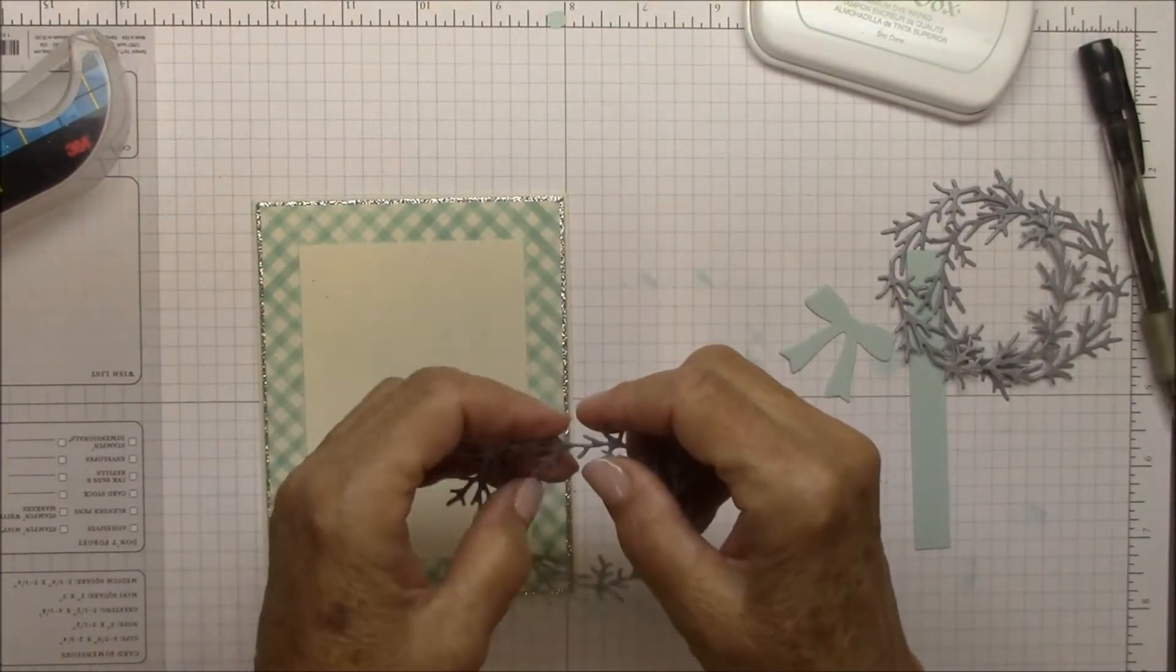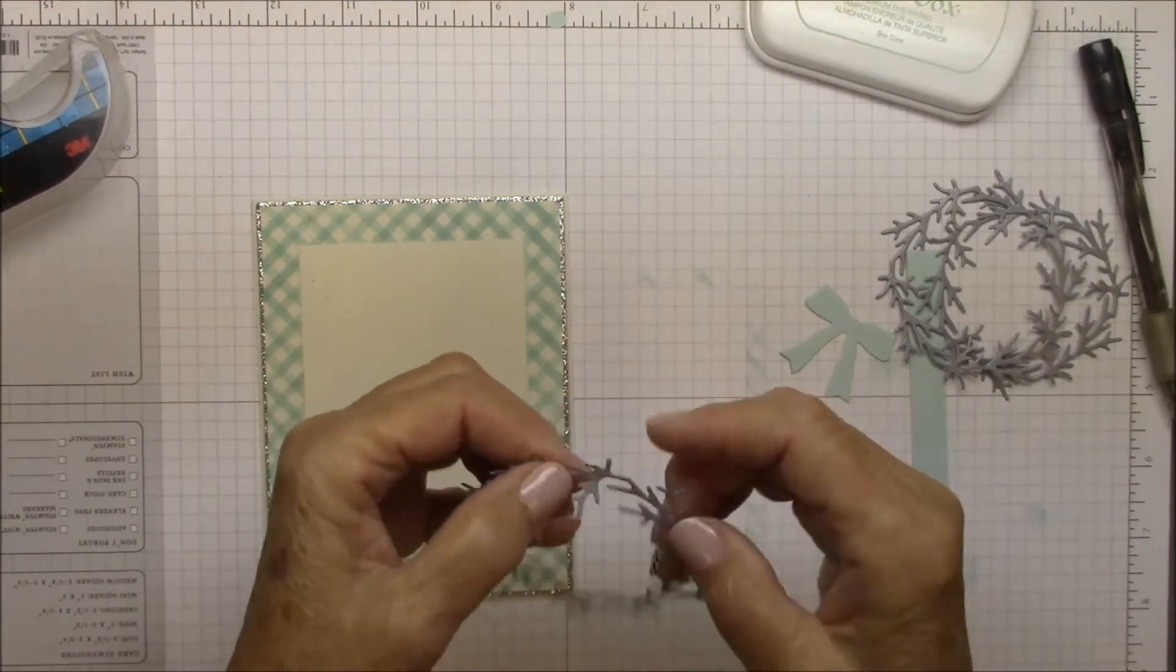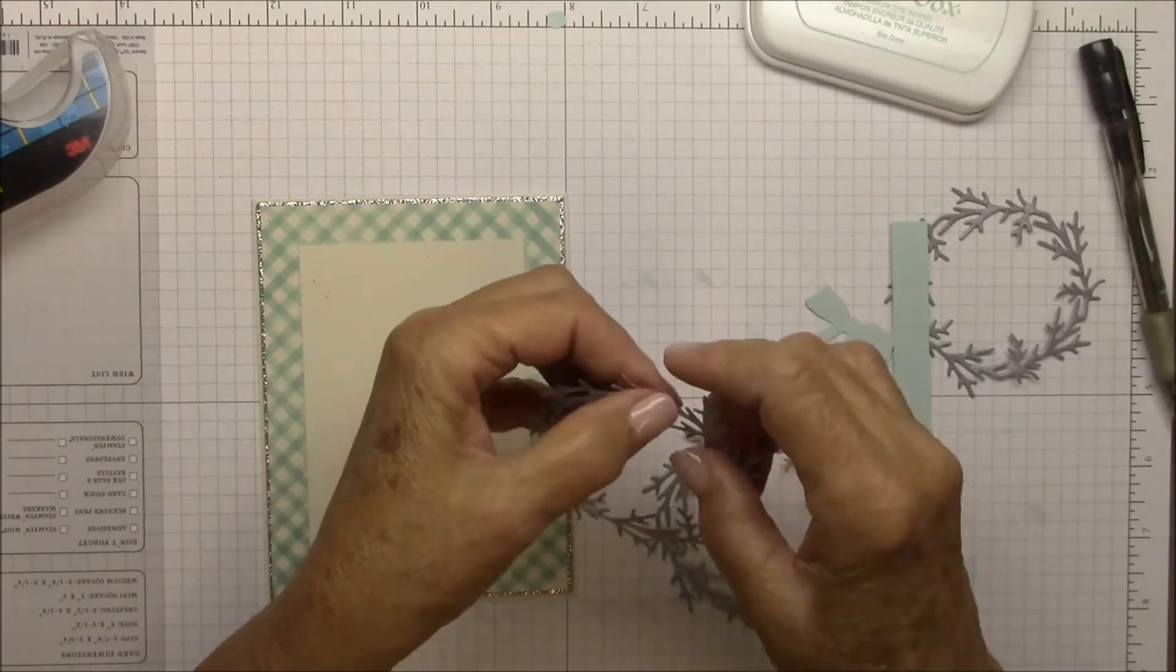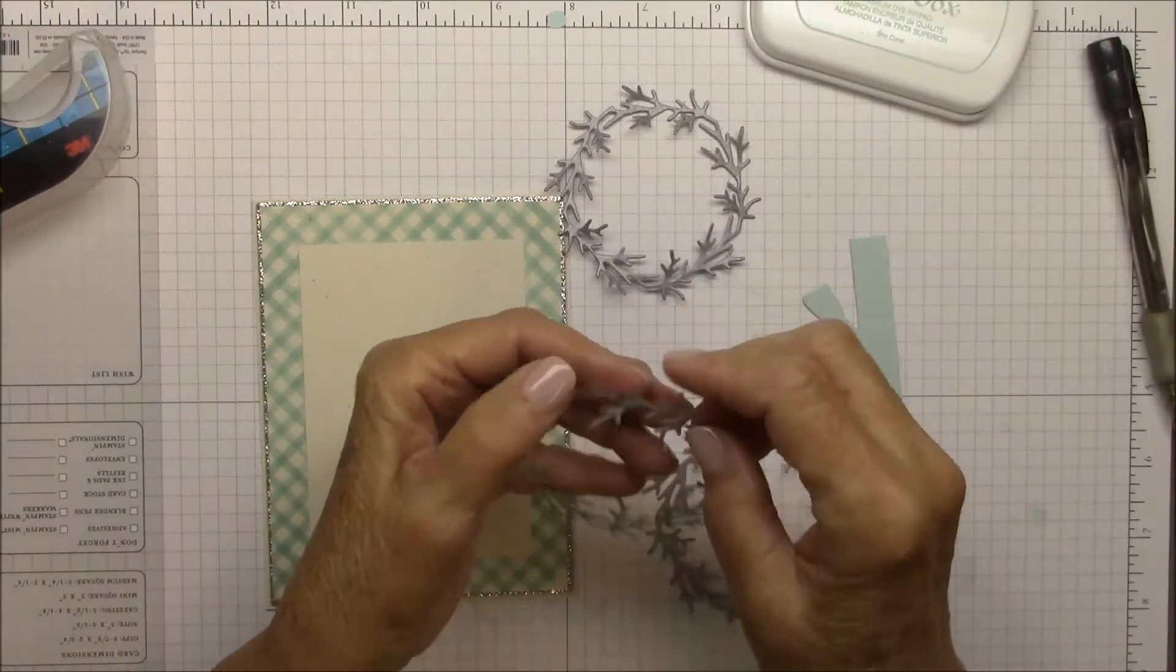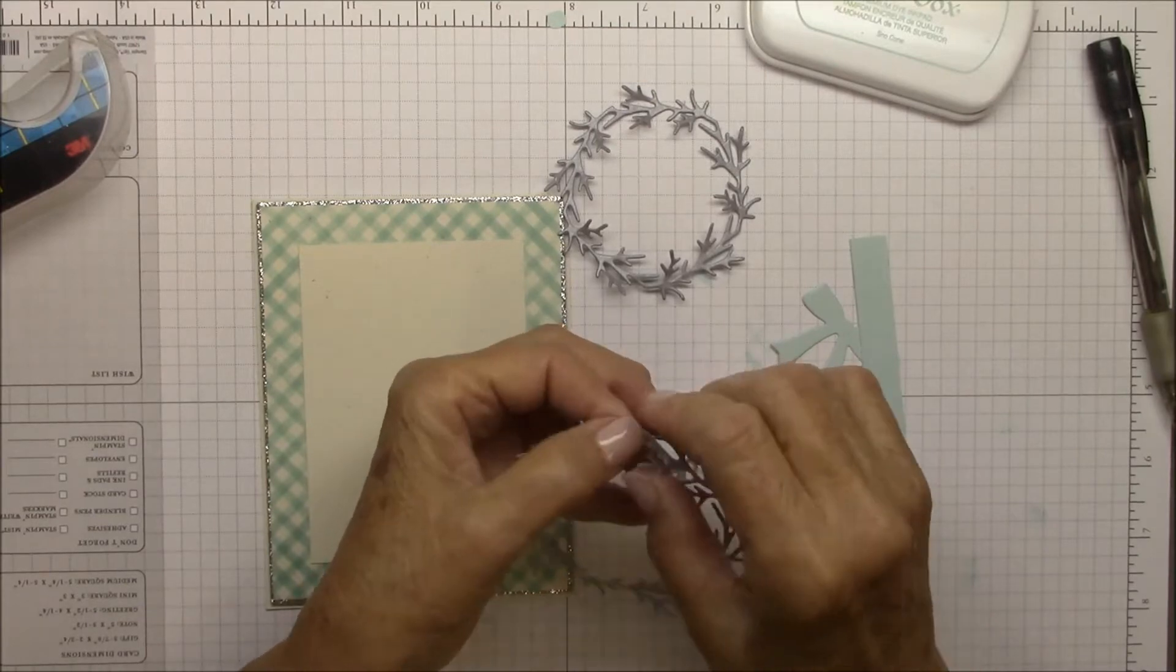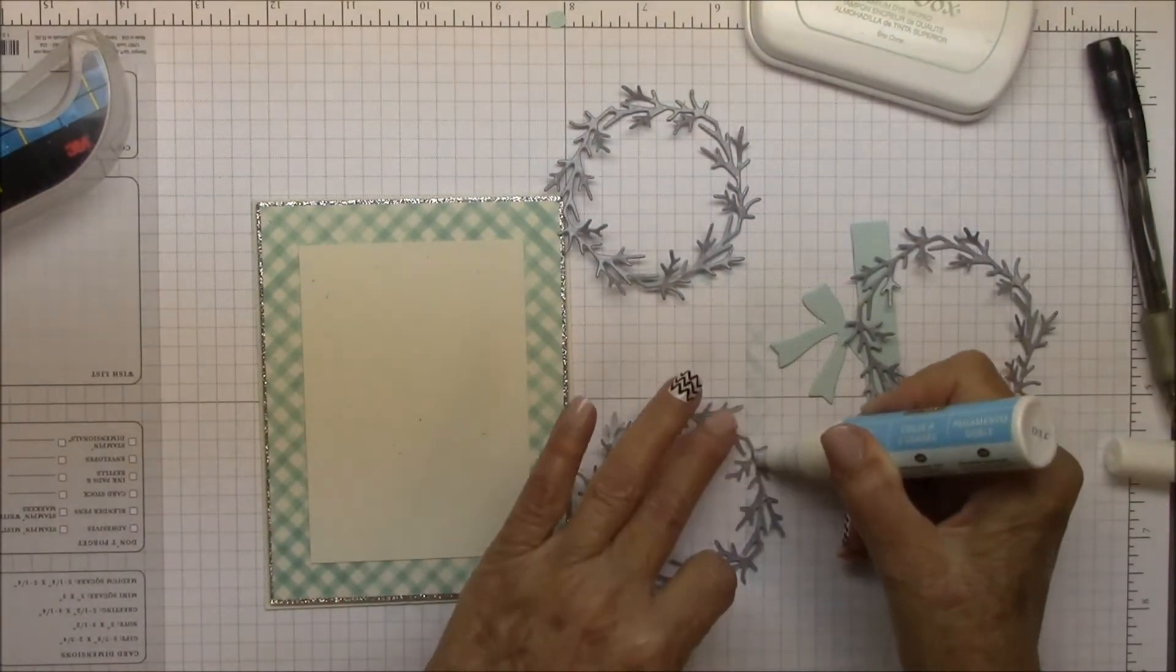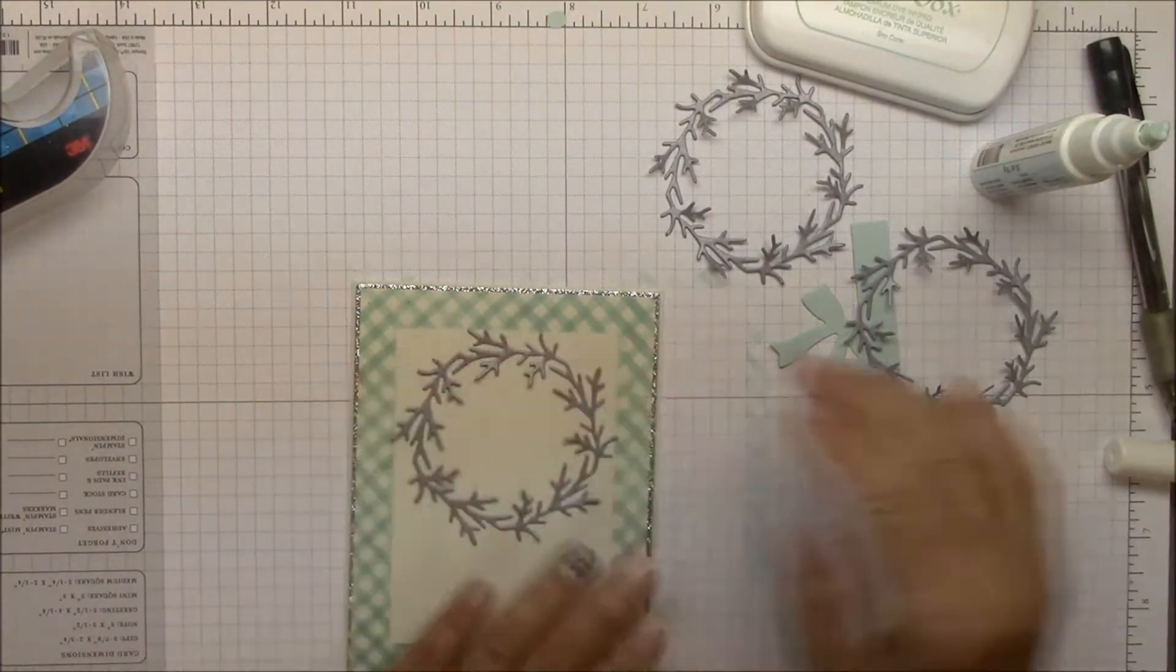Now I'm going to work on my wreath. I like, again, as I mentioned, I like dimension on my cards. So I kind of like to shape elements like the wreath and leaves. I have three copies of it, and I'm shaping each layer before I put them on the card.